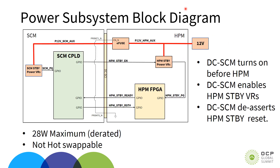The figure below shows a typical power subsystem block diagram with an SEM. The 12V aux from the power supply is turned on to the SEM via an E-fuse, which is enabled by the present signals. The E-fuse is recommended to protect against overcurrent conditions. The standby VRs are the first to turn on, after which the SEM enables the HPM standby VRs via the HPM standby enable signal. Once the HPM standby VRs are good, the HPM standby ready signal is input back to the SEM, which in turn releases the HPM standby reset signal to the HPM. The spec specifies a max power of 28 watts for the SEM, and the SEM is not intended to be hot swappable.